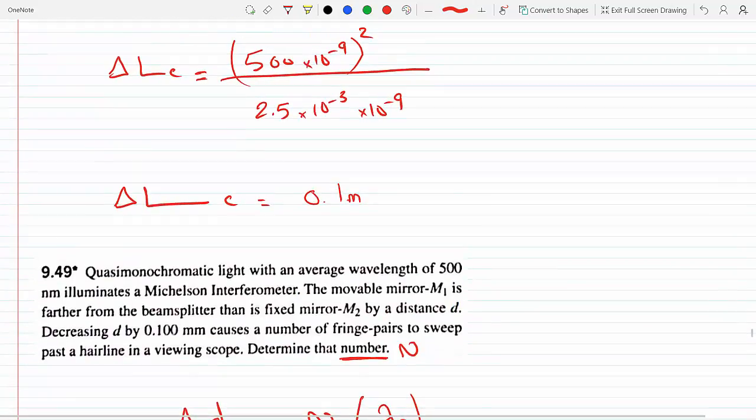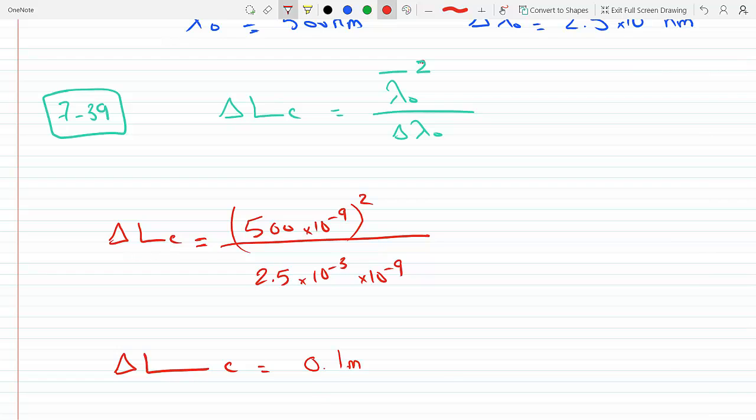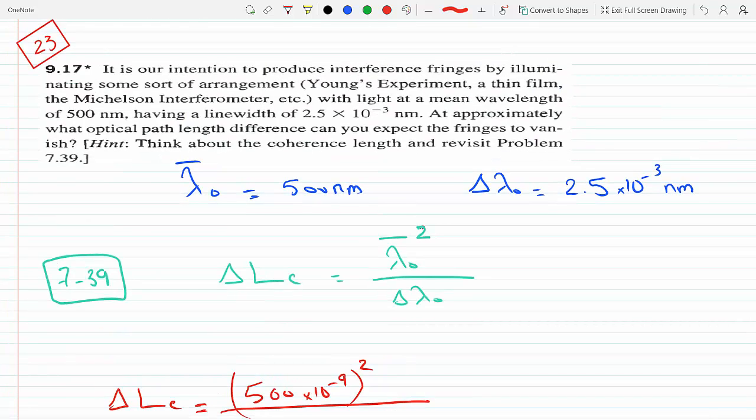0.1 meters is the optical path length difference that we need to have.